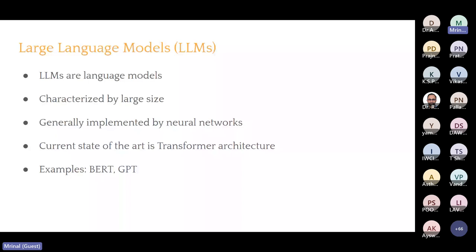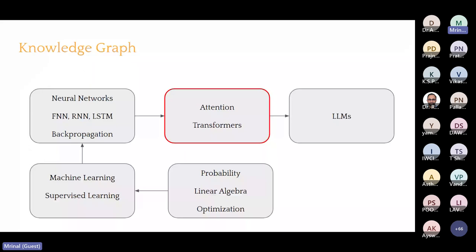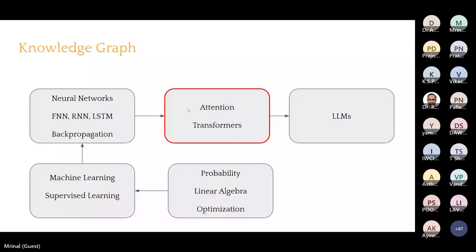This is the basic knowledge graph required to understand large language models and ChatGPT. It starts with basics like probability, linear algebra, and optimization; then comes machine learning and supervised learning; then neural networks — FNN, RNN, LSTM, backpropagation; then comes attention and transformers; and after that we can understand LLMs. I do not have the time to cover the entire path, so I will just focus on attention and transformers — the red box — and connect them to large language models. I expect you have the other three boxes already in your pocket.